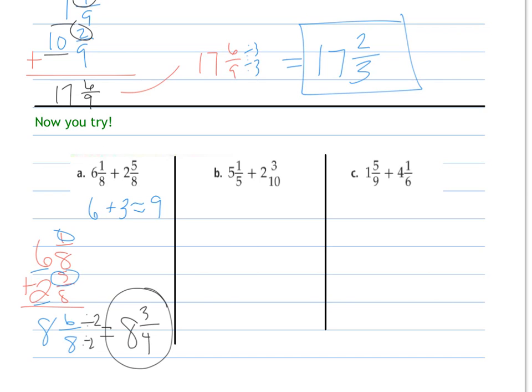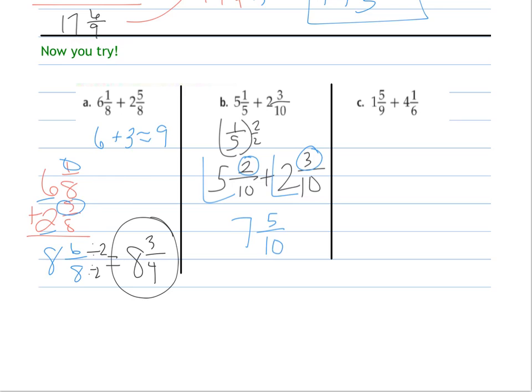5 and 1 fifths and 2 and 3 tenths. We need a common denominator, so we're going to change the 1 fifth by a factor of 2 to be 2 tenths. So I really have 5 and 2 tenths plus 2 and 3 tenths. Add my numerators, I get 5 tenths. Add my whole numbers for 7. And I simplify for 7 and 1 half, because they share a factor of 5.